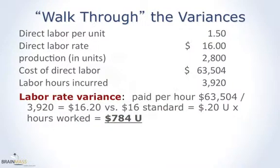Here's the calculation for the labor rate variance. You paid $63,504 and you know how many hours were worked, so you can figure out the average rate per hour — that's $16.20. You compare the actual average rate to what you should have paid, which is $16.00. You paid $0.20 over standard, so that's unfavorable. You multiply that times how many hours were worked to get the dollar magnitude of the variance. So your labor rate variance is $7.84 unfavorable.